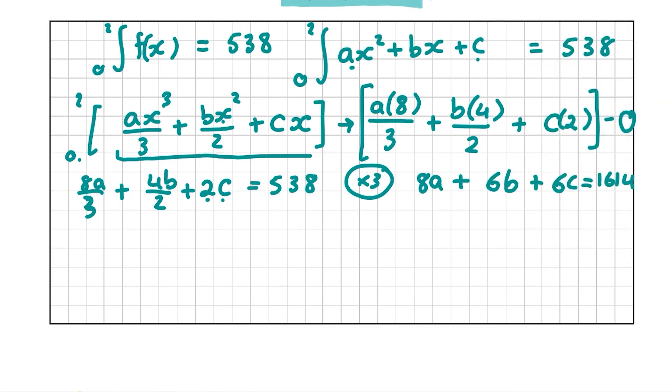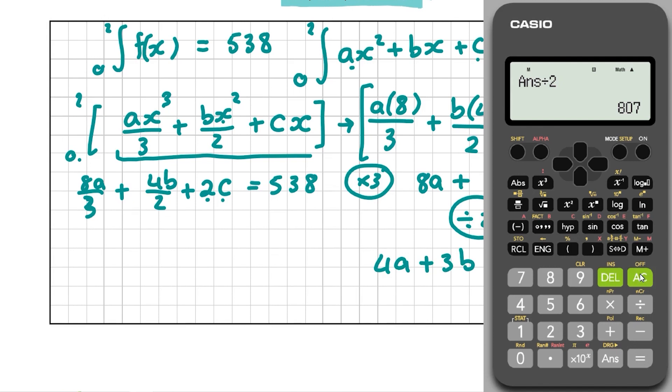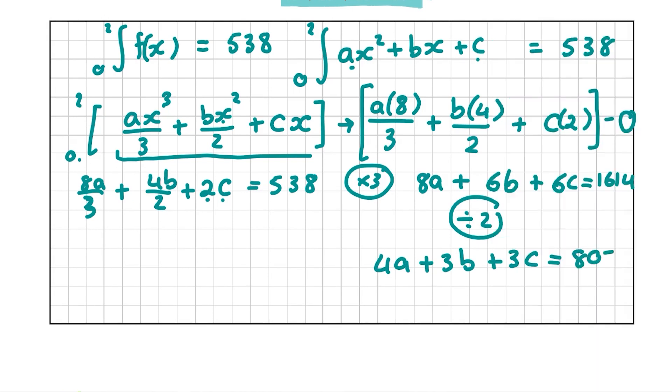This still isn't quite what we're looking for, but we can see that we're getting closer. So now we're going to divide by 2, and we're going to get 4A + 3B + 3C = 1614/2 = 807. This is exactly what we're looking for. So that is our final answer, and we have proved that when the area of K is 538 square units, we've proved that this equation here is true using integration. For this question, you are going to get 10 marks.